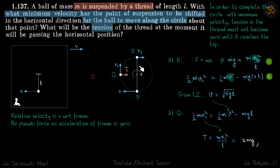Let's assume that it has completed the circle and has just reached the point R with velocity V2. In order to complete the circle with minimum velocity, tension in the thread must not become zero until it reaches the top. When it reaches the top, only then the tension becomes zero. Now this ball has only one force, gravity towards down, and its acceleration towards down is V2 square by R, that is normal acceleration.